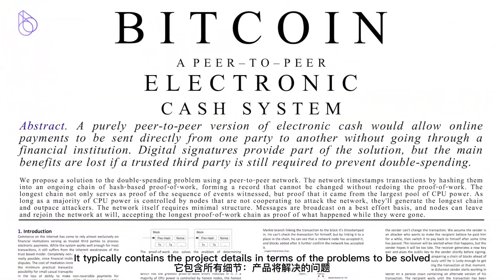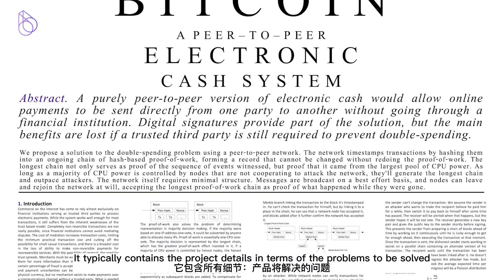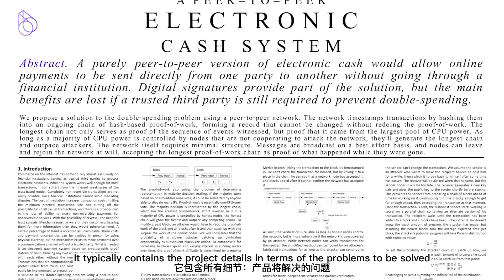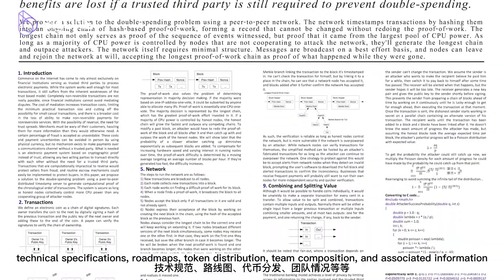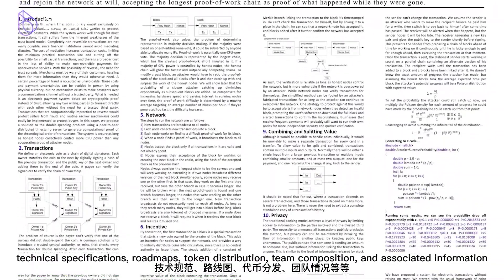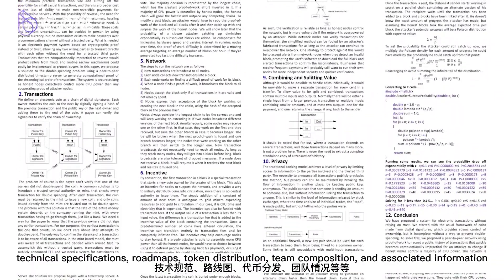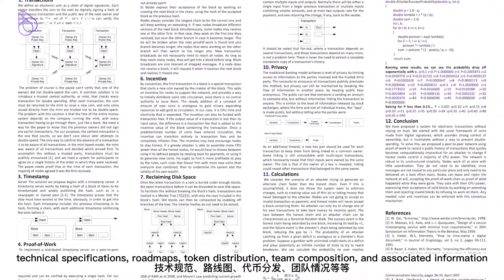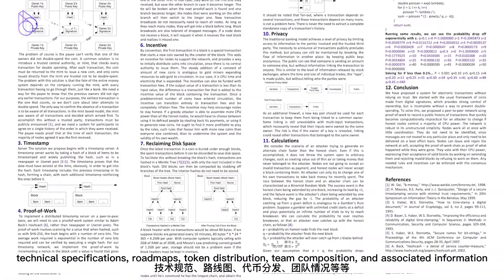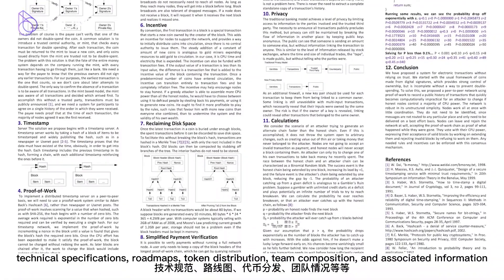White paper: a white paper is a document created to explain a project to potential investors and supporters. It typically contains project details in terms of problems to be solved, technical specifications, roadmaps, token distribution, team composition, and associated information.